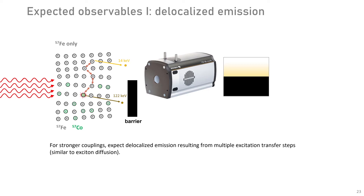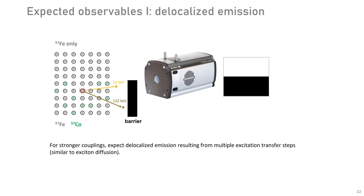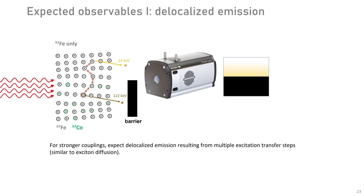If transfer rates are indeed orders of magnitude faster, you could fit many transfer steps within the lifetime of, say, the 14 keV state, and look for observables similar to exciton diffusion. Reaching microns or even hundreds of microns of diffusion length would be observable. The sample here would have two regions: one with just iron-57 nuclei, and one with the same crystal but heavily doped with cobalt-57. With stimulation, you would expect to draw out excitation and get emission from a region that would not normally show any emission without coherent stimulation.